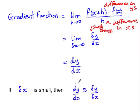So if delta x is small, then dy by dx is approximately equal to delta y over delta x. Remember, this is the gradient at a particular point, and this is the gradient of that line segment as the two points are very close together.